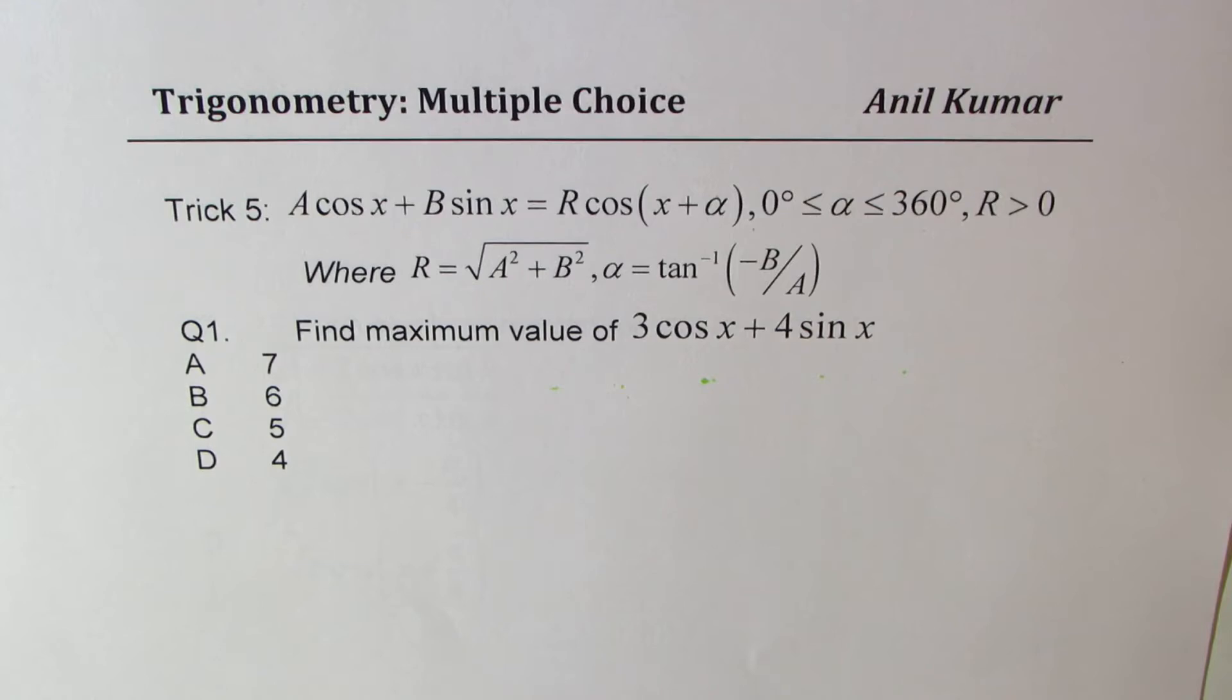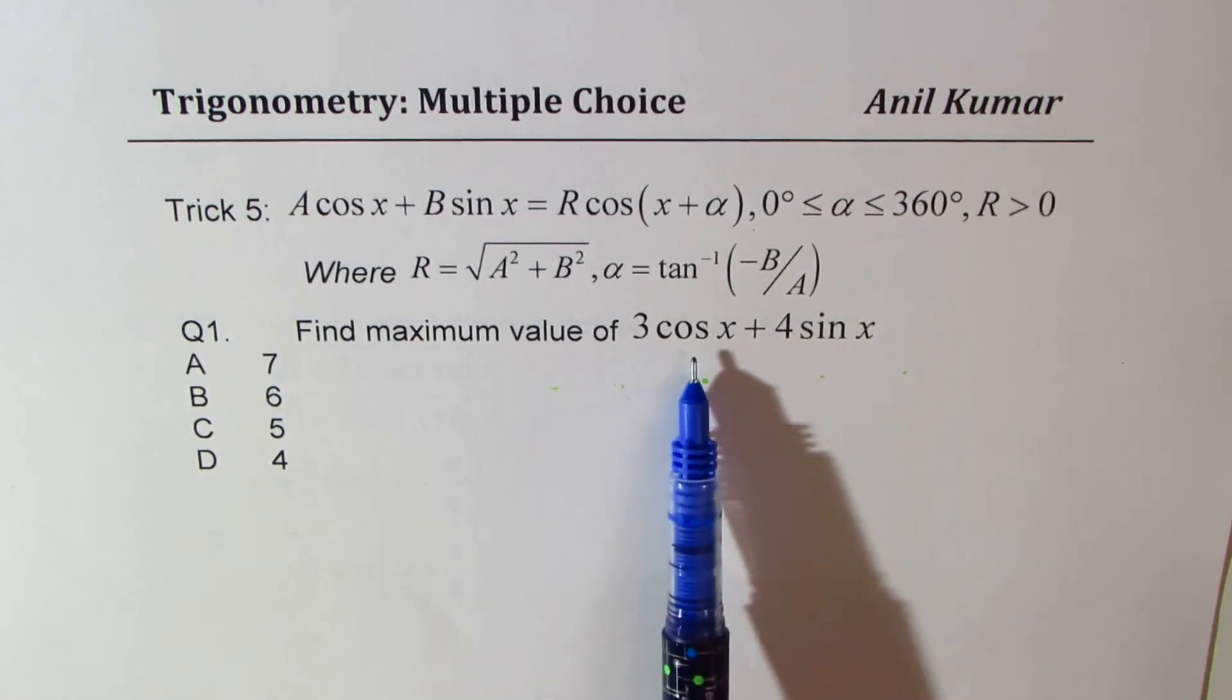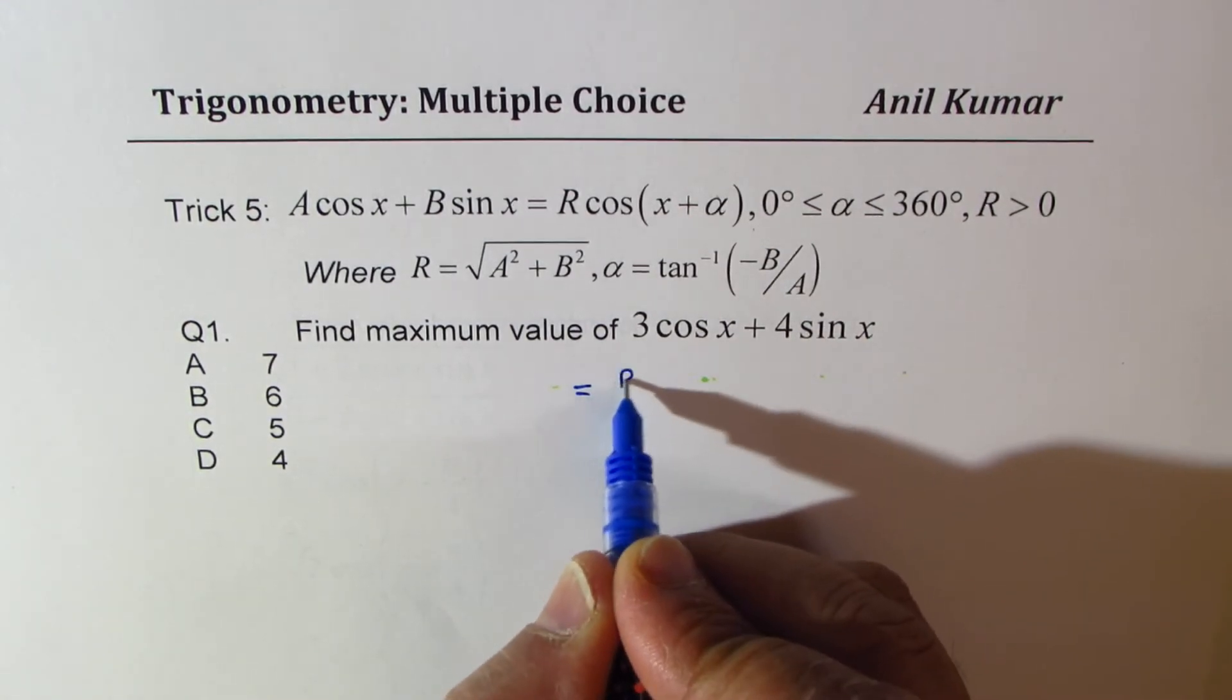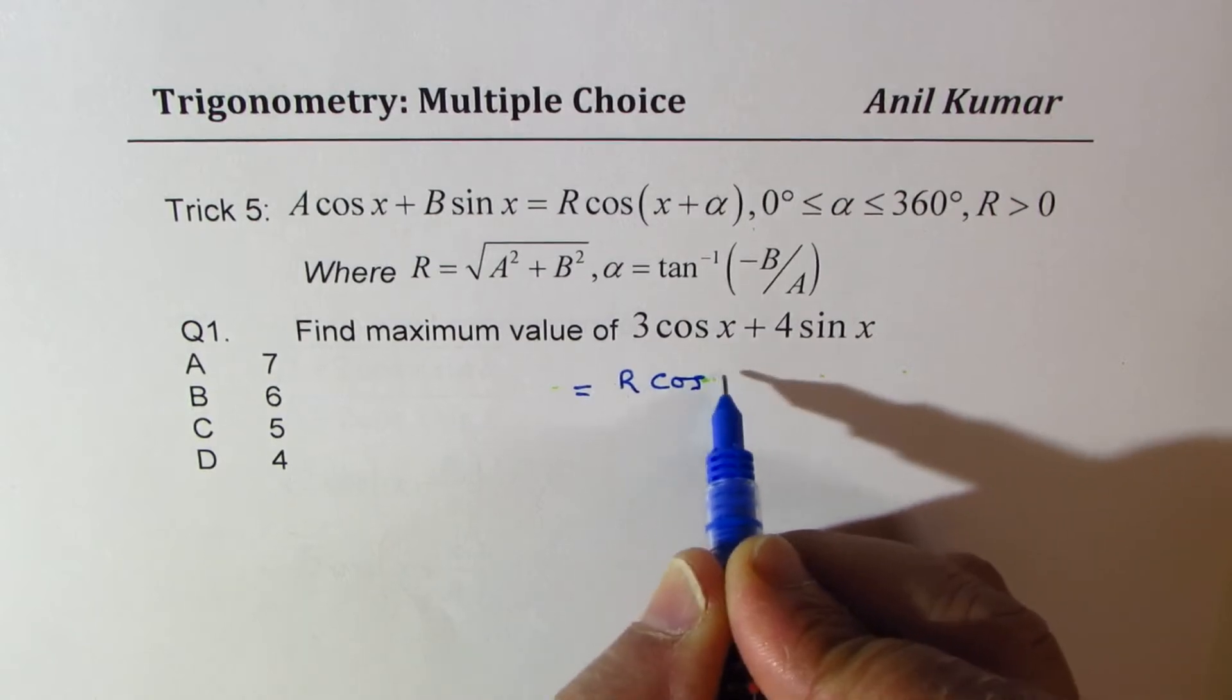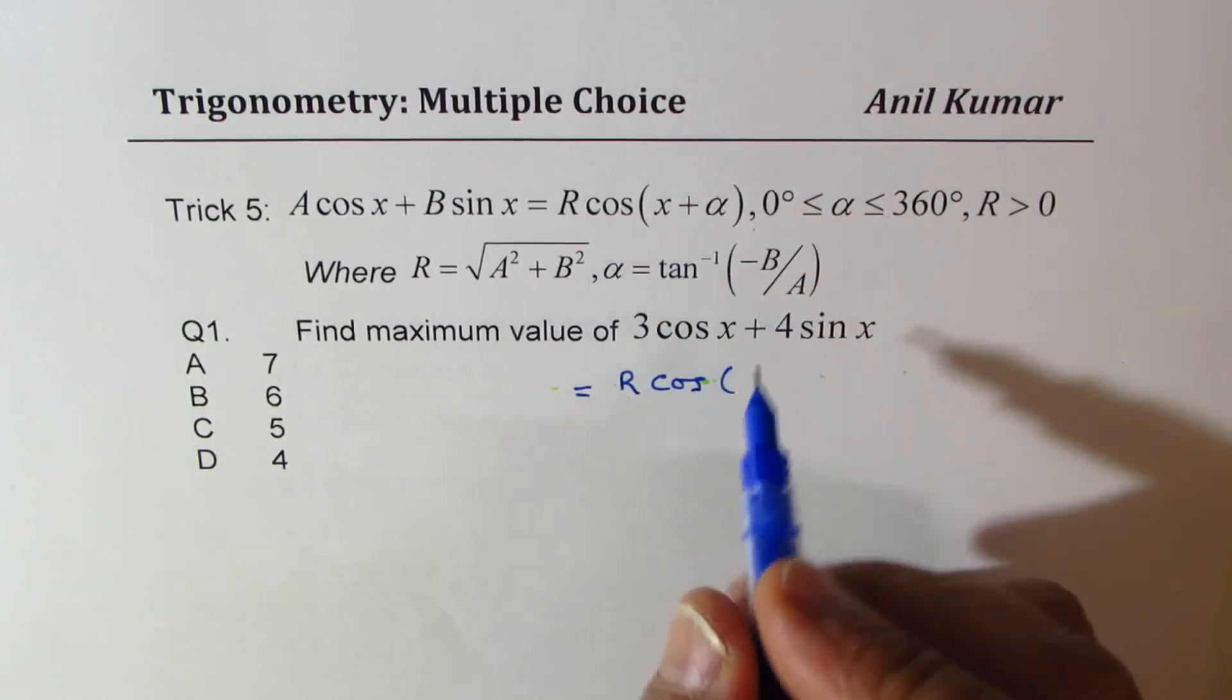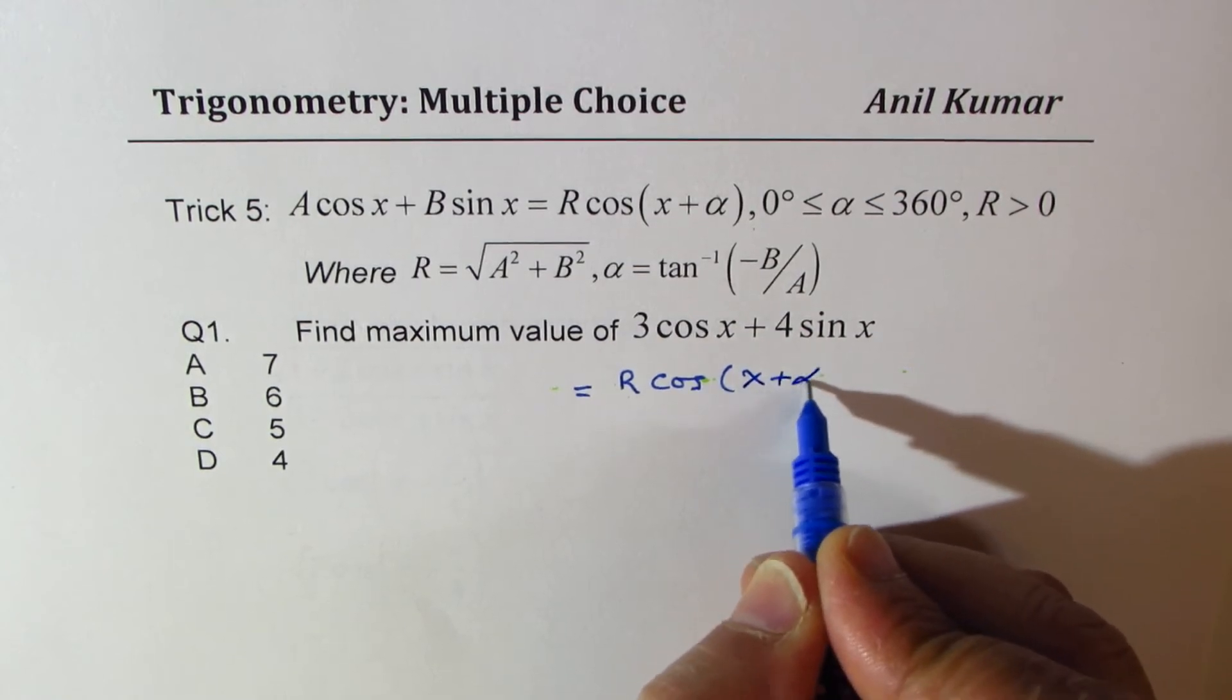So the very first question here is: what is the maximum value of 3 cos x plus 4 sin x? I could write this as R cos of some angle x plus alpha.